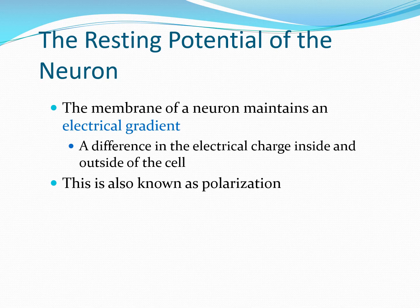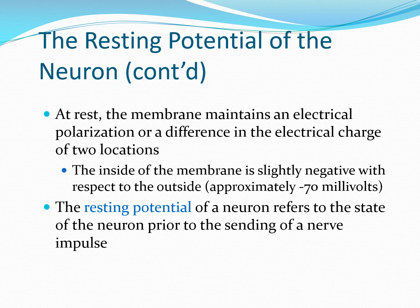The neuron membrane maintains an electrical gradient — the difference in electrical charge inside compared to outside the cell — known as polarization. Anything different from zero is polarized. At rest, the membrane maintains this electrical polarization — inside is slightly negative at approximately negative 70 millivolts. This is the resting potential: the state the neuron is in prior to sending a nerve impulse. Whenever an action potential is not being sent, the neuron is at this resting potential of negative 70 millivolts.